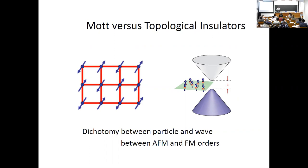The distinction between the two really represents a fundamental dichotomy between the particle and wave aspects of electrons. The Mott insulator is understood from the point of view of particles, from real space, while topological insulators are naturally described in terms of coherent Bloch waves in a periodic medium. Another fundamental distinction is that in a Mott insulator the magnetic order is usually antiferromagnetic.